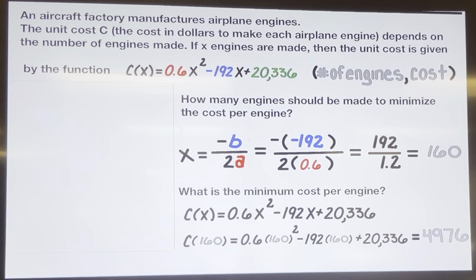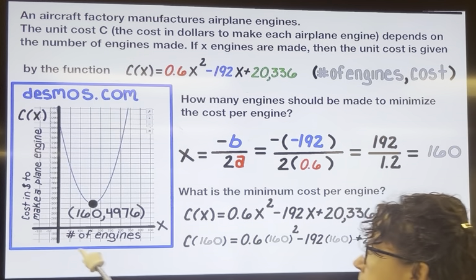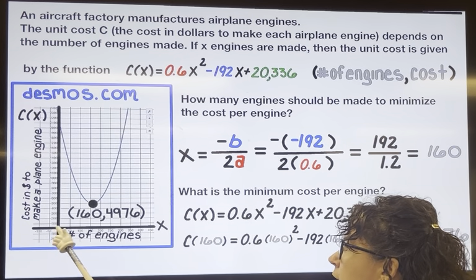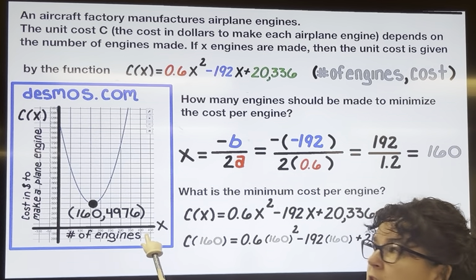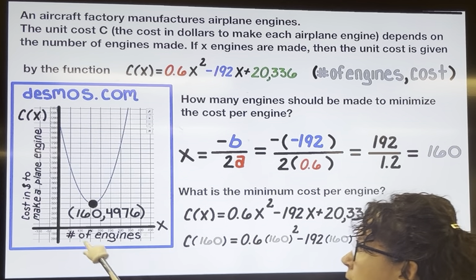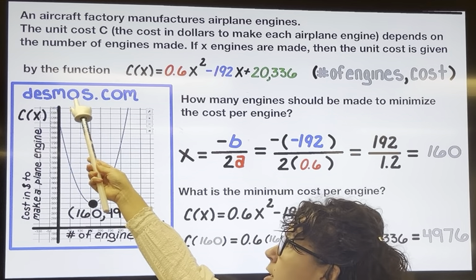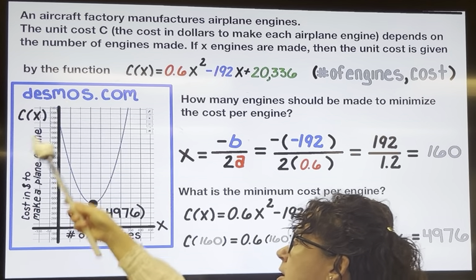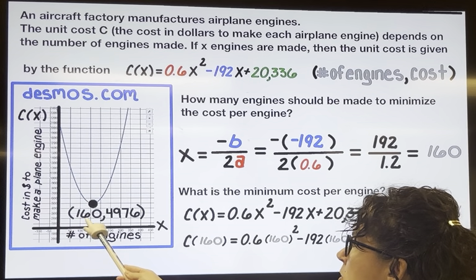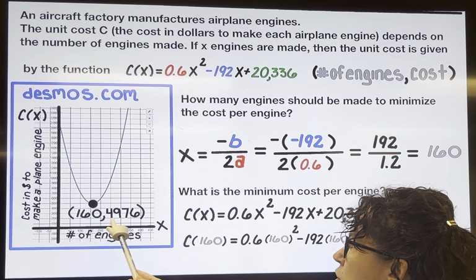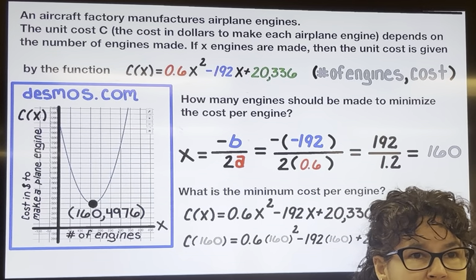I went ahead and graphed it so you could visualize this. The graph goes from 0 to 450 engines on the x-axis and 0 to 2,400 dollars on the y-axis, showing the parabola with a minimum at 160 engines for $4,976 dollars.